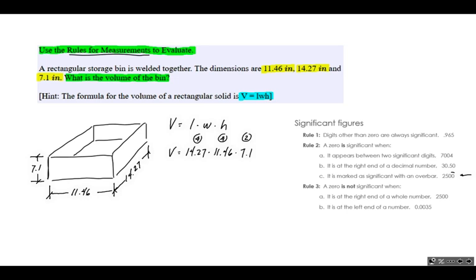When we get an answer to this multiplication problem, we are then going to have to round to that number of significant figures, two significant figures. So we punch in these values into our calculator. 14.27 times 11.46 times 7.1, and that's going to give us 1,161.09282.